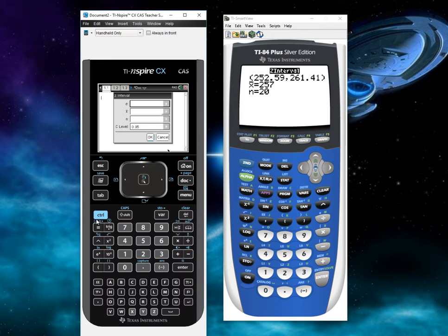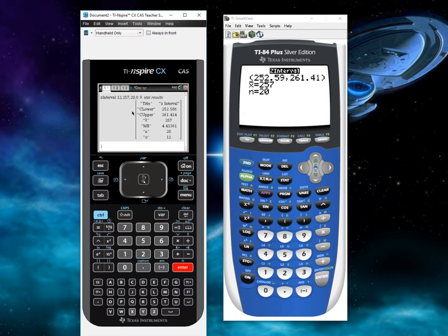And then we just enter the stuff in. Sigma was 12. X bar was 257. And n was 20. And we're doing a 90% confidence interval. So the C level is 0.9. Go down here to OK. And hit enter. And it gives it here.